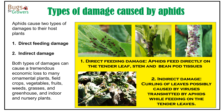Aphids generally cause two types of damages to their host plants: direct feeding damage to all plant parts, and indirect damage by transmitting viral diseases to many plant species.